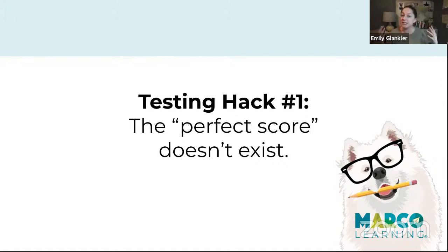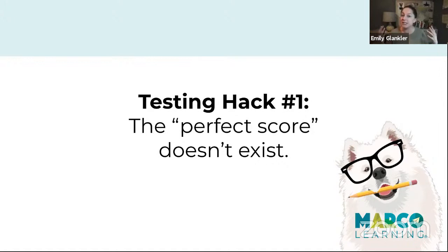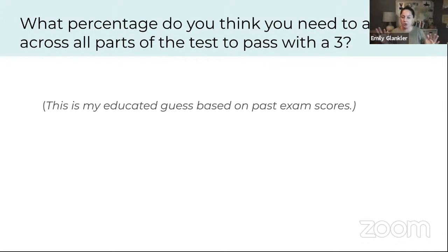Think about taking the whole test — 55 multiple choice questions, the SAQ, the LEQ, the DBQ — and averaging how you did across all sections. What percentage average do you think you need to get a passing score, a 3 out of 5 on the AP exam? A lot of people will guess a really high number — at least 70. From what we can tell based on past AP World History exams, the answer is around 60%.